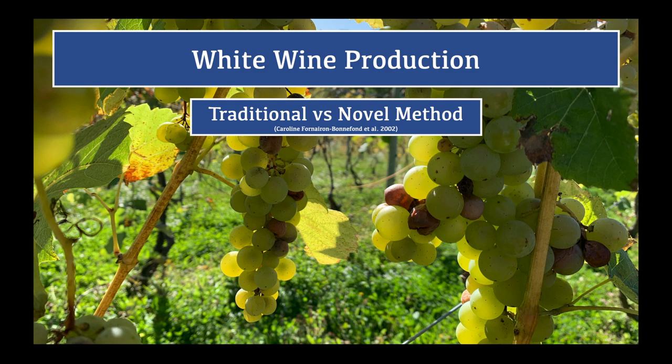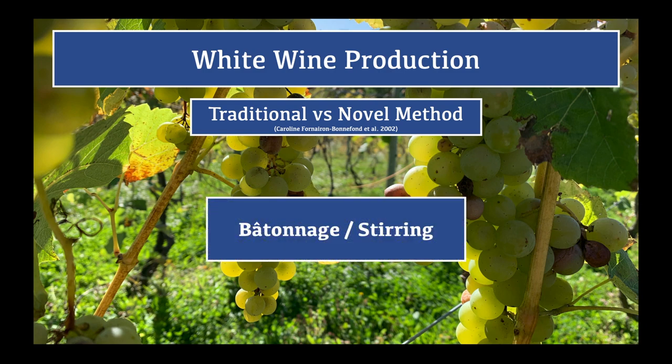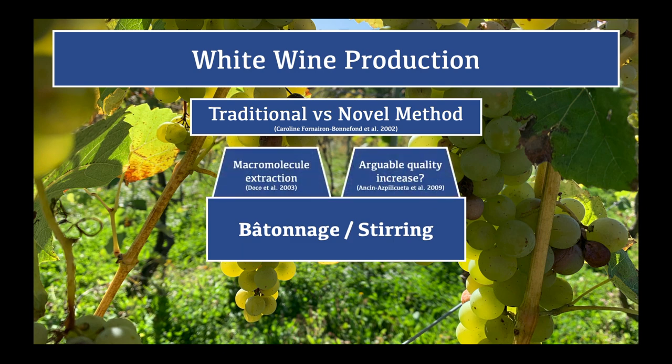The most distinctive feature of white wine lees aging is the use of stirring, also known as batonnage. This causes the lees to be re-suspended into the wine and arguably improves wine quality by increasing the amount of macromolecules extracted into the wine and reducing wine haze. However, while stirring may increase macromolecule extraction, it may not increase extraction of typically beneficial compounds such as esters.